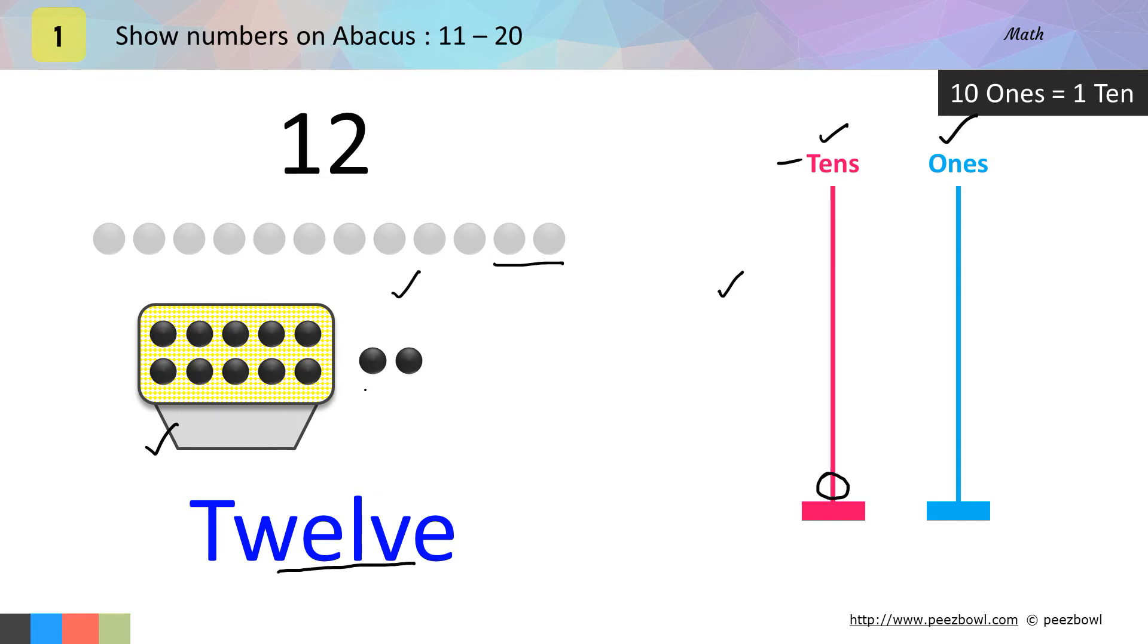As we have 1 and 2 balls outside the box, on the ones place we will have 2 circles: 1 and 2 circles. We are done. This is the way to show 12 on abacus.